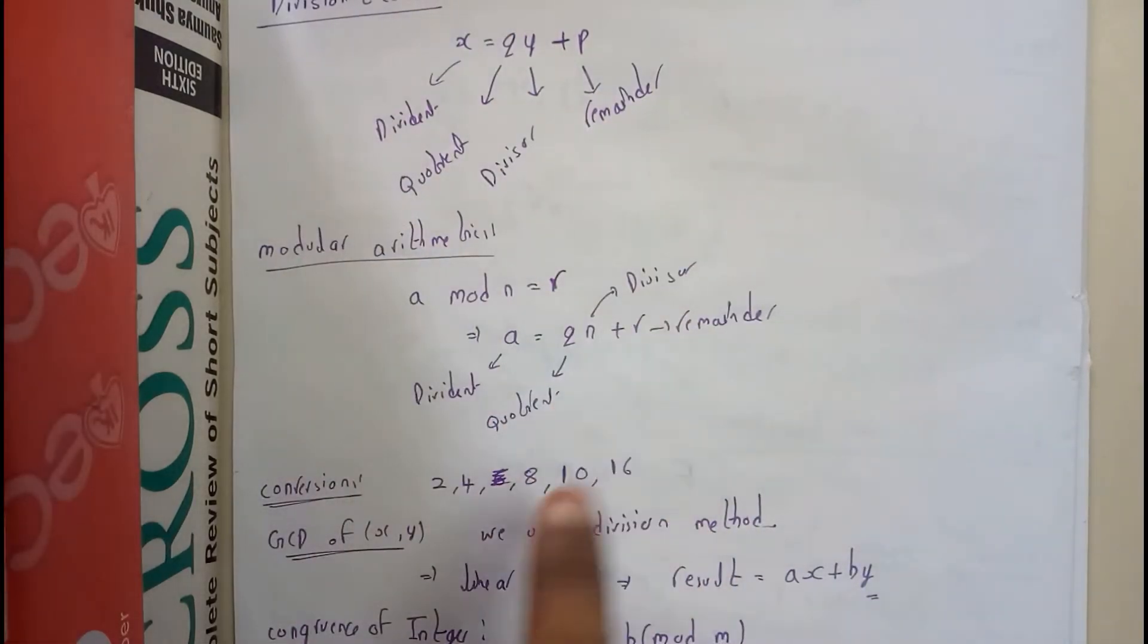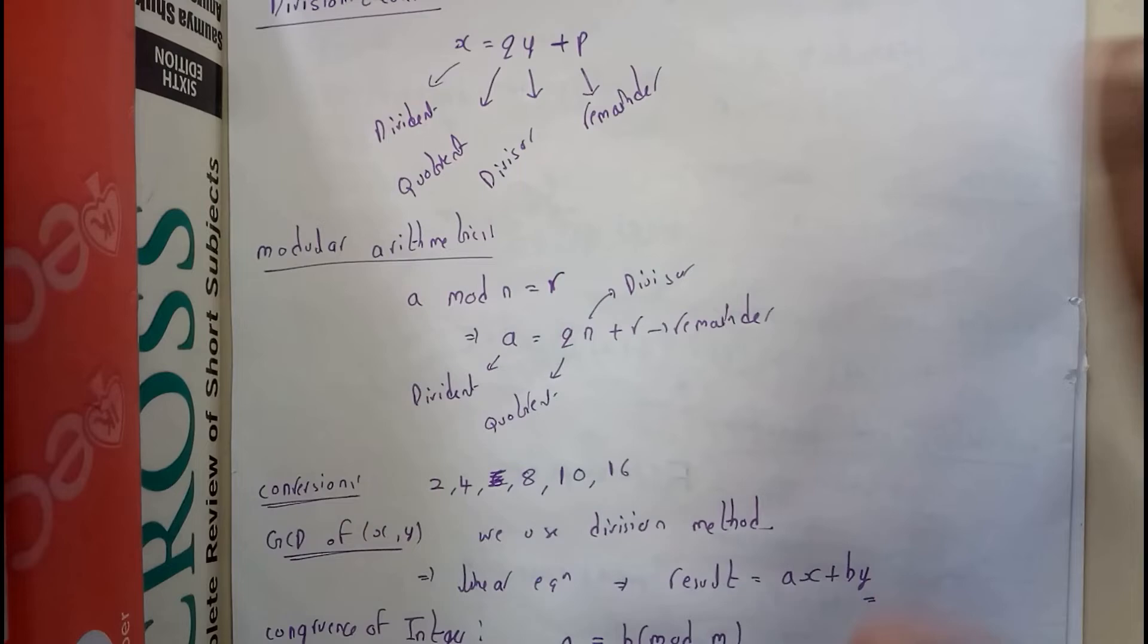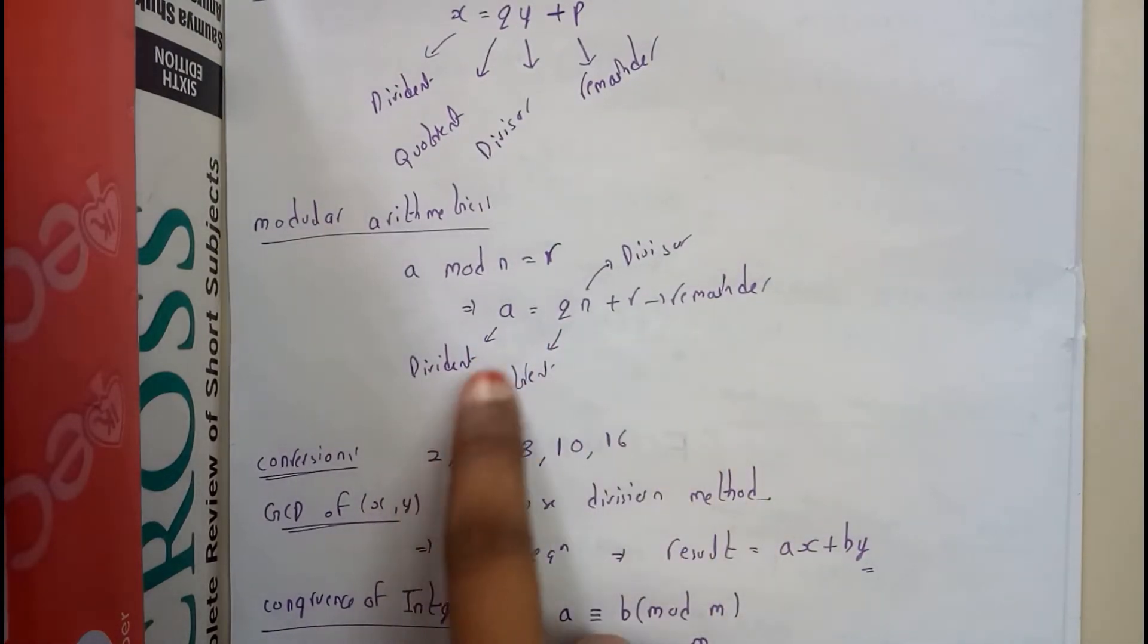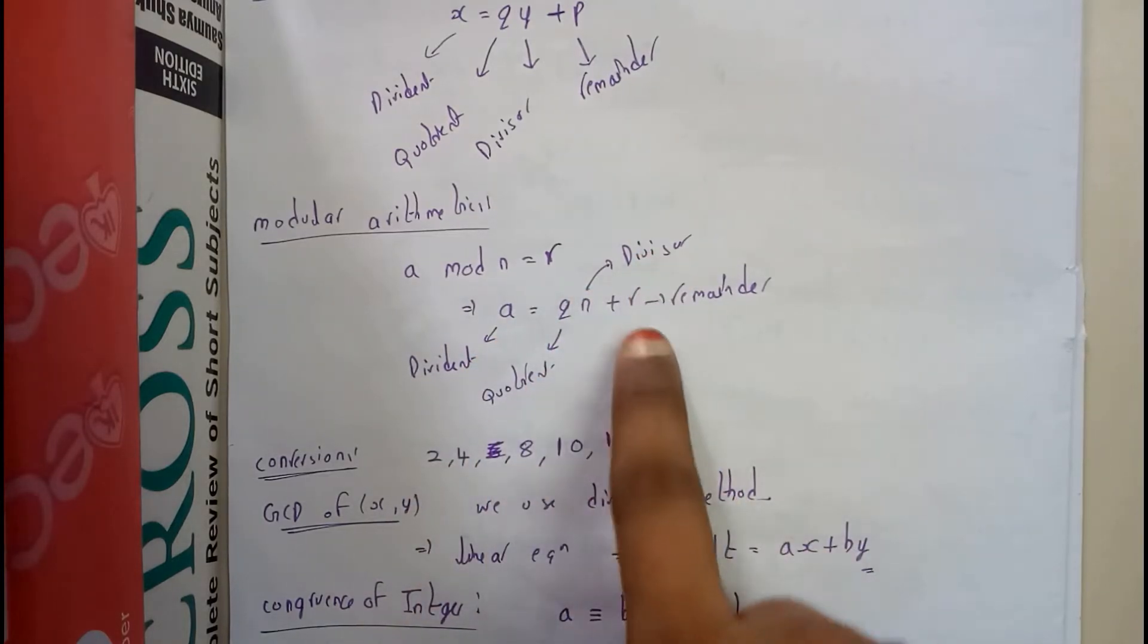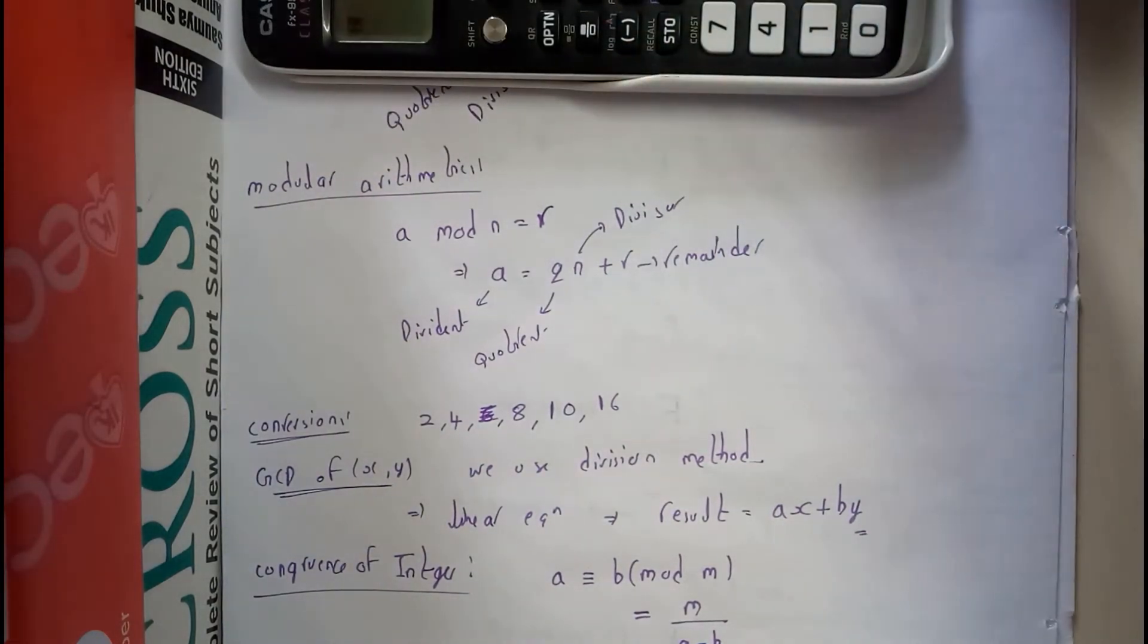Arithmetic modulo is similar: a mod n = r, where we write the remainder as the result. So a = qn + r, where a is the dividend, q is the quotient, n is the divisor, and r is the remainder.